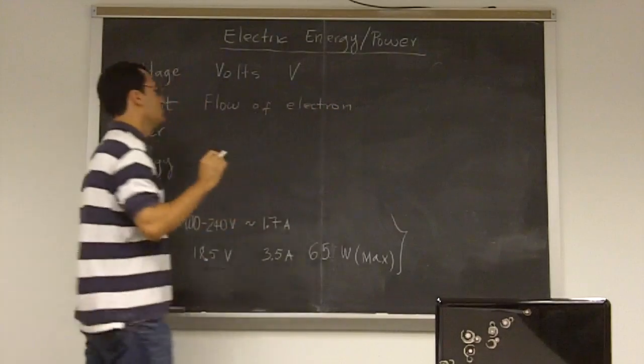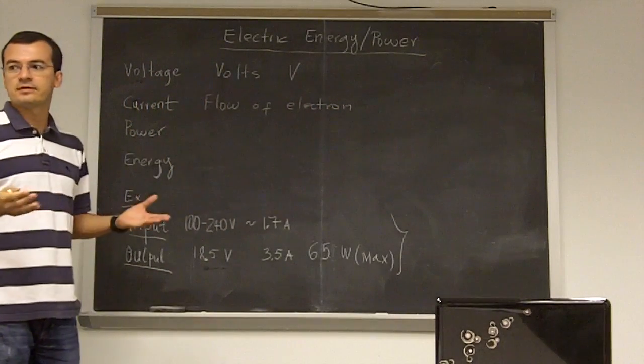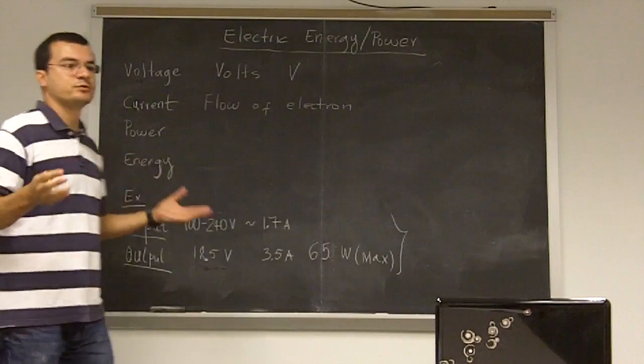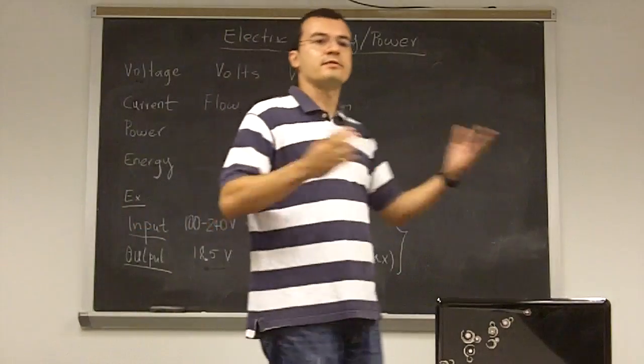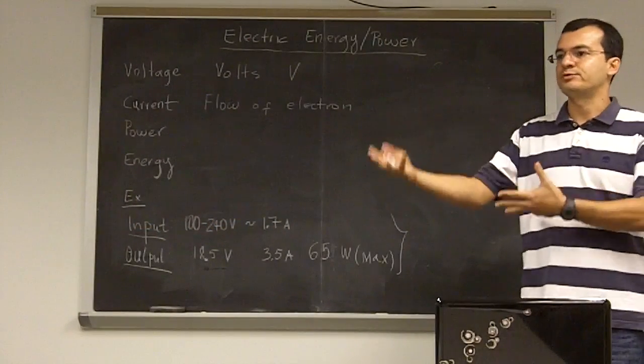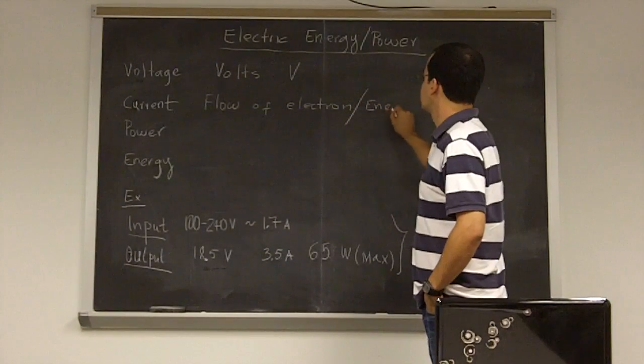So you can tell from this example that in this charger, the input voltage can go from 100 to 240 volts, and the output voltage is basically fixed or constant and it's going to be 18.5 volts. So now current. Current means the flow or indicates the flow of electrons.